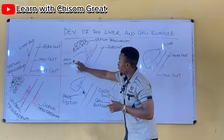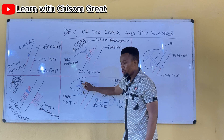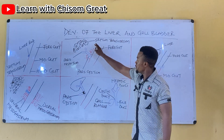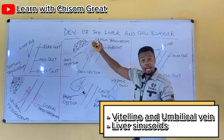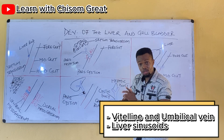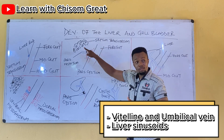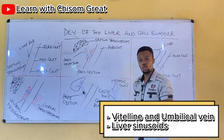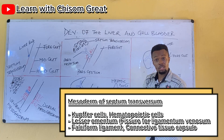The pars hepatica eventually gives rise to the hepatic duct — the right hepatic duct and the left hepatic duct. As the cells of the septum transversum begin to break down to form the hepatic trabeculae, the vitelline vein and the umbilical vein that lie in the septum transversum also begin to disintegrate to form the sinusoids of the liver.